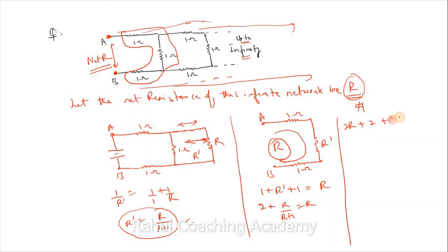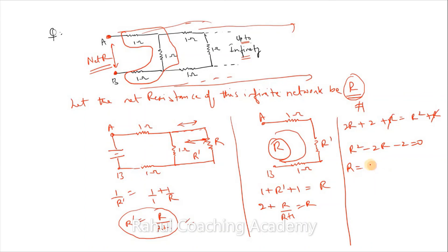Solving: 2R + 2 + R = R² + R, which simplifies to R² - 2R - 2 = 0. It's a straightforward quadratic equation. Using the quadratic formula: R = (2 ± √12) / 2 = 1 ± √3.